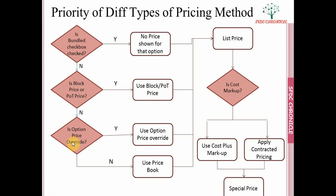If block or percent of total is not defined, CPQ checks whether any option price override is set. If yes, it uses the option price override; otherwise it uses whatever is provided in the price book, which determines the list price. The list price is the base price from which everything else is derived.